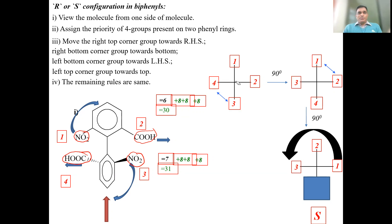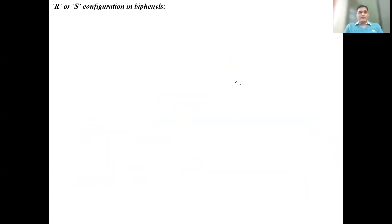So the given biphenyl compound has S configuration. The basic rule: in biphenyls, each phenyl group must have two different groups; both phenyl groups must be perpendicular to each other (90°) due to bulky groups at ortho position; then draw the Fischer projection cross; move right-top corner group to right side, right-bottom to bottom, left-bottom to left, left-top to top; check right positions of highest and lowest priority groups; make necessary interchanges; determine R or S. Now let's take the next example.